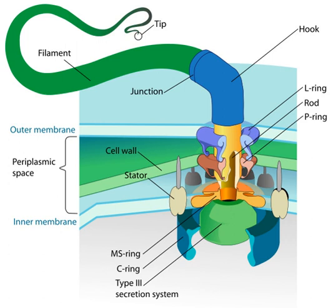The similar structure in the archaea functions in the same way but is structurally different and has been termed the archaellum. Flagella are organelles defined by function rather than structure. Flagella vary greatly. Both prokaryotic and eukaryotic flagella can be used for swimming but they differ greatly in protein composition, structure, and mechanism of propulsion.